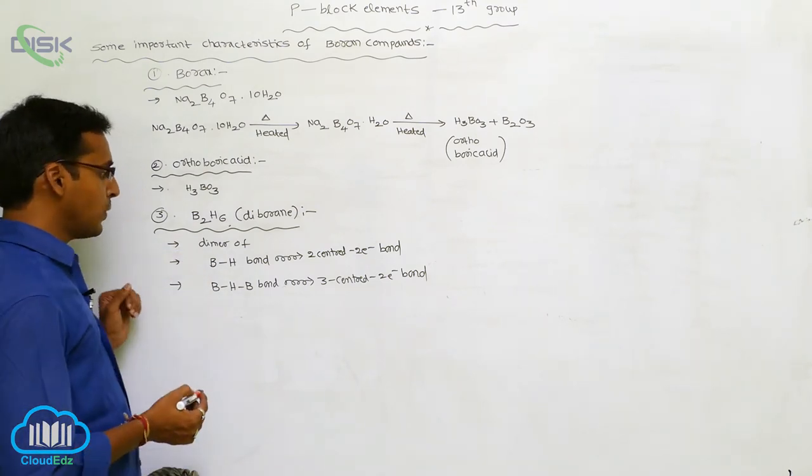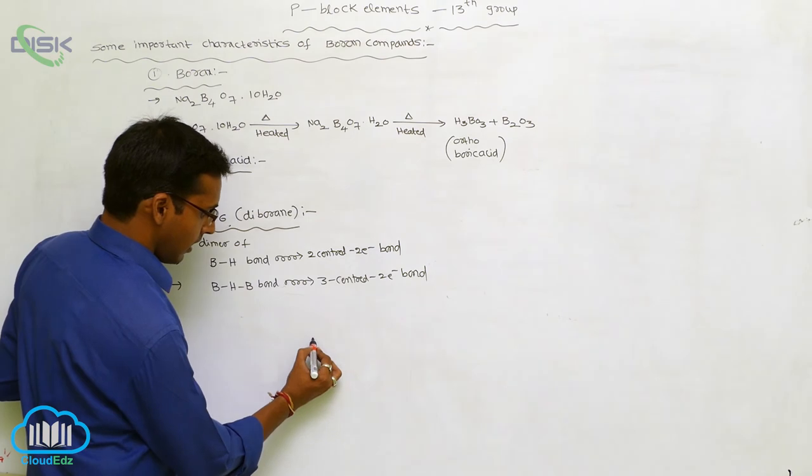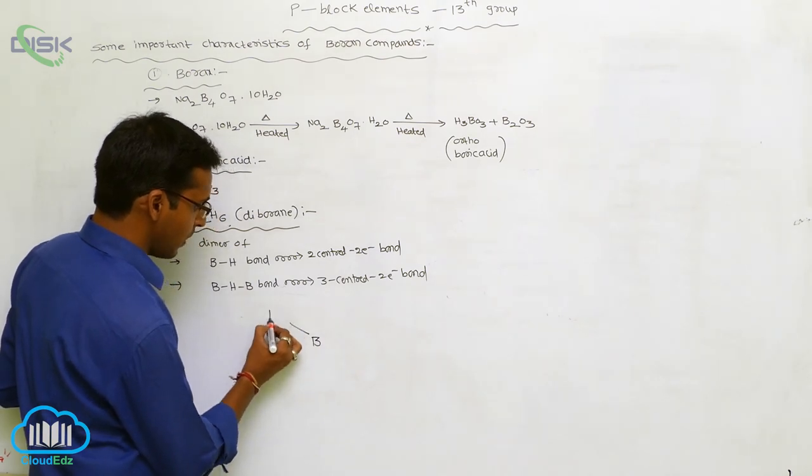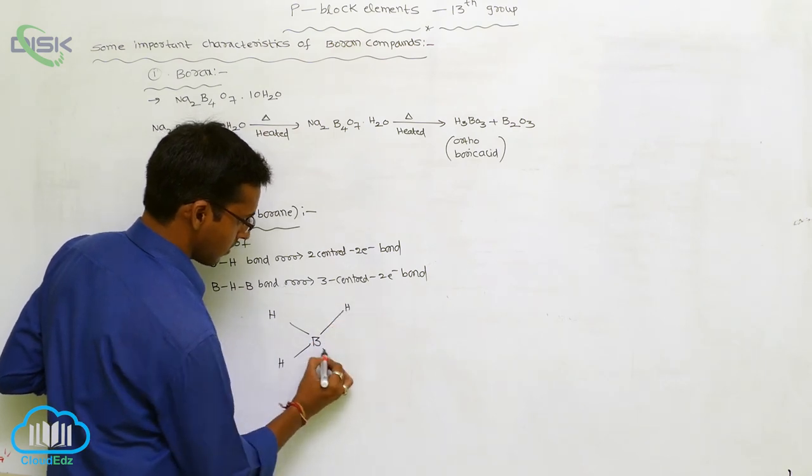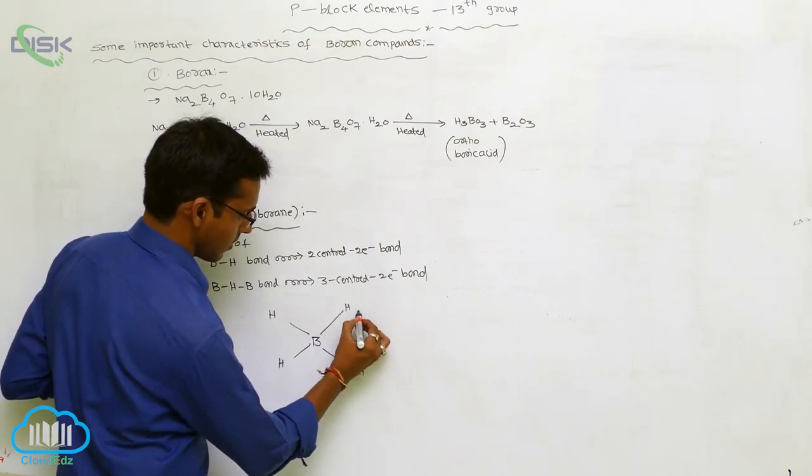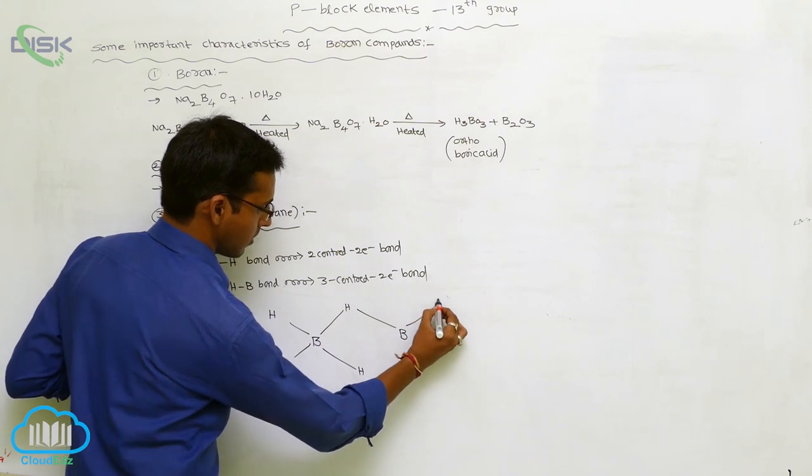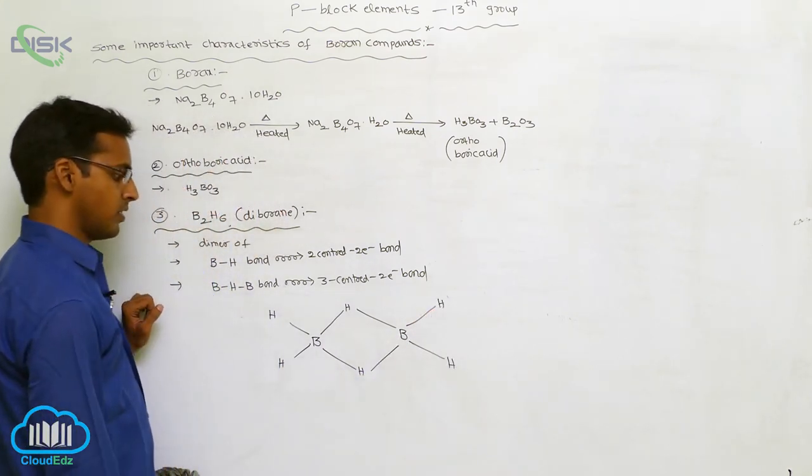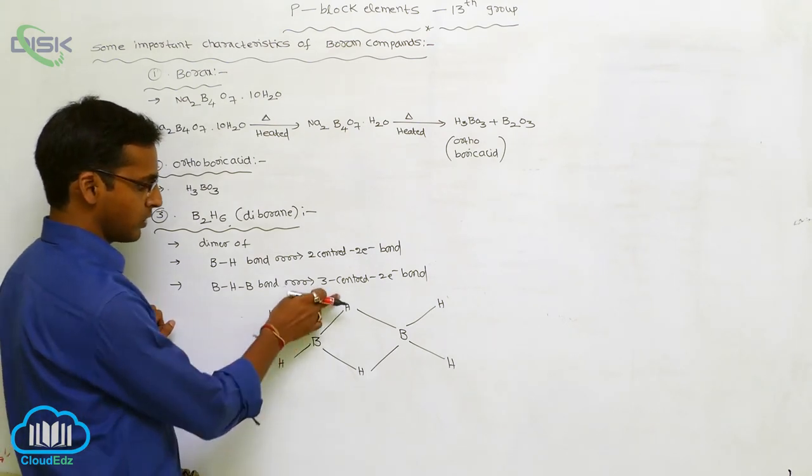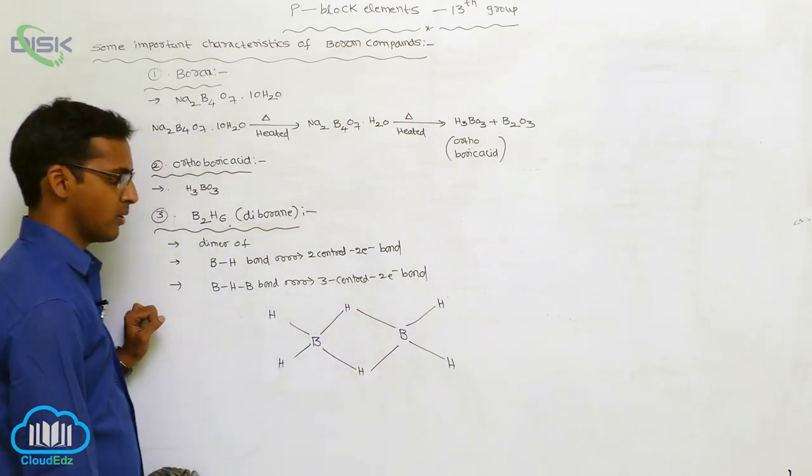B2H6 is the structure of B2H6. This is the structure of B2H6 with total six hydrogens. It is represented in hybridization form.